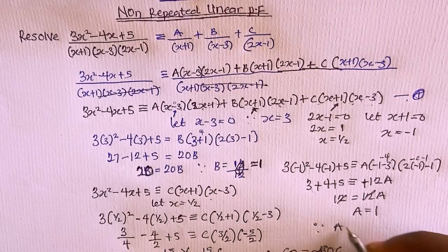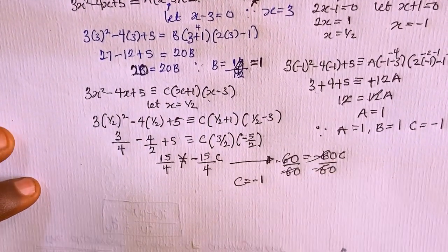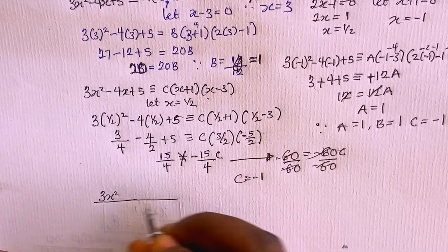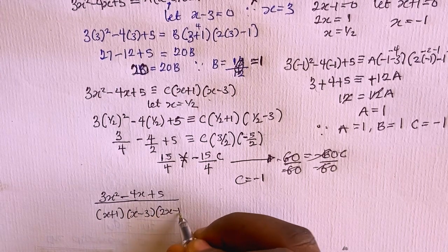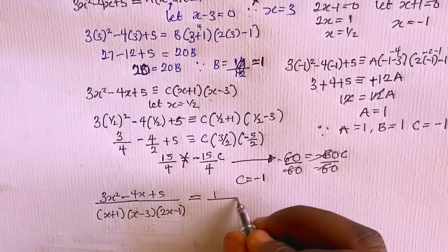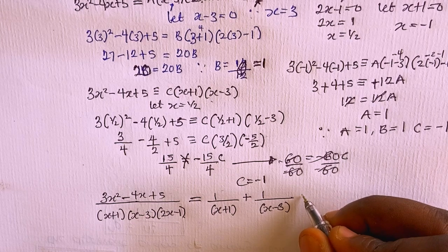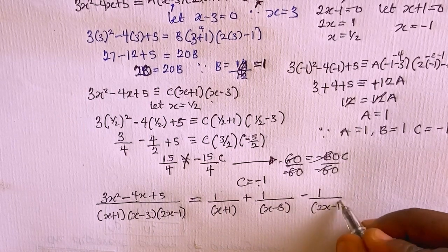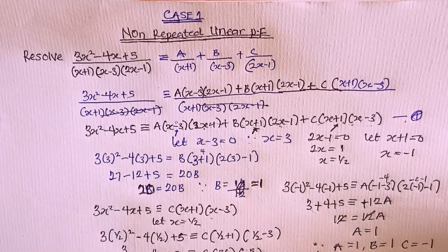So we have A=1, B=13/20, and C=−1. Therefore, resolving 3x²−4x+5 over (x+1)(x−3)(2x−1) into partial fractions gives: 1/(x+1) + 13/20·1/(x−3) − 1/(2x−1). That's the complete solution for this first case of non-repeated linear partial fractions. If you enjoyed this video, please click the notification button and share with others.